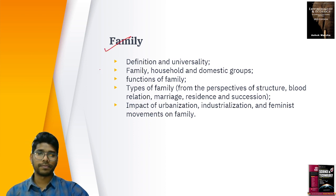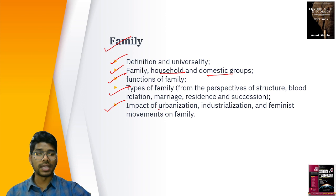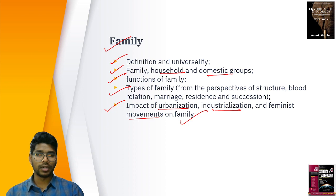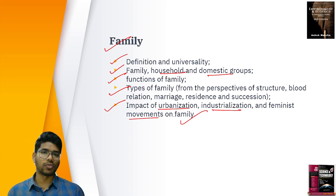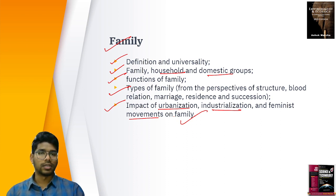We discuss family as a social institution: the definition and universality of family, household and domestic groups, functions of family, types of family, and the impact of urbanization, industrialization and feminist movements on the family. Previously families used to be joint, but now they have become nuclear — an impact of urbanization, as most rural people migrate to urban areas in search of resources and livelihood.